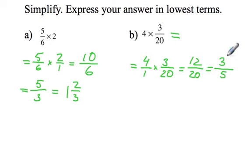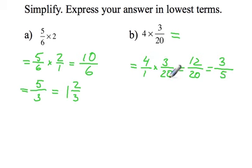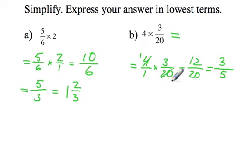So the final answer is 3 fifths. The other way you could have done this question is to notice that 4 and 20 have a common factor. So 4 divided by 4 is 1 and 20 divided by 4 is 5, which leaves us with 1 times 3 is 3, and 1 times 5 is 5.